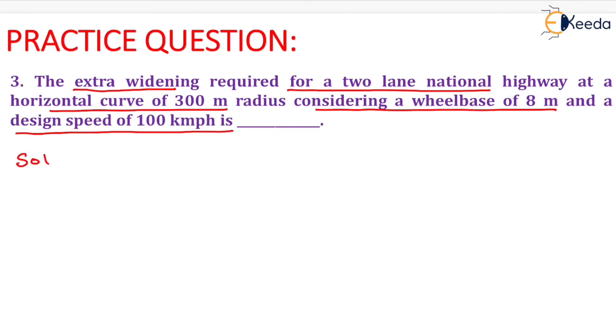Now we need to calculate the extra widening value, We. The formula for We will be equals to nl² upon 2r plus v upon 9.5 root r.